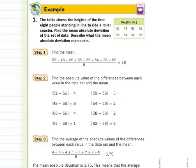Step 2: find the absolute value of the differences between each value in the data set and the mean. It's written as the absolute value of 52 minus 56, 48 minus 56 — all these values are going to be positive. So you can see this is 4 away from the mean, 8 away, 4 away, 1 away, 3 away, 2 away, 2 away, and 6 away from the mean.